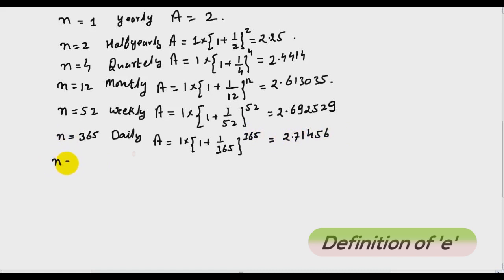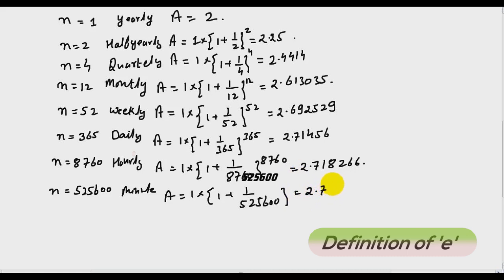Similarly if I put n equal to hourly, then I have 8760 and the bank pays me interest hourly. I will get 2.718266. If n becomes per minute, then my amount will be 2.71827921.